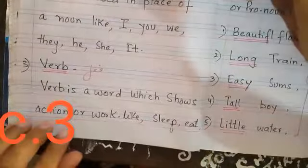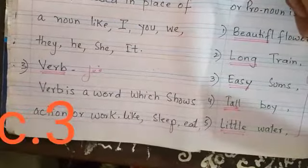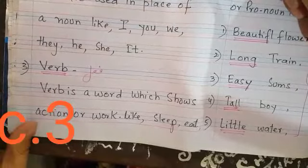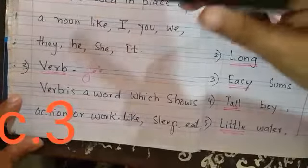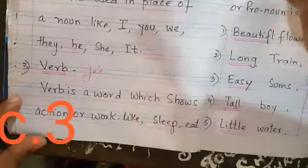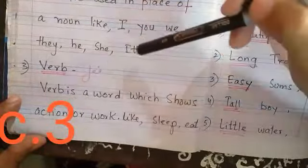Pronoun. These are words that are used in place of a noun. You cannot take everyone's name again and again. We have to use another word. Pronoun are those words that are used in place of a noun, like I, you, we, they, he, she, it.